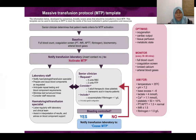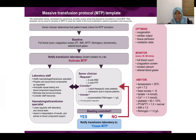The specific targeted aims you must monitor and achieve at all times are: body temperature more than 35°C, pH more than 7.2, base excess less than 6, lactate less than 4, calcium more than 1.1, platelets more than 50, PT/PTT less than 1.5 times normal, INR less than or equal to 1.5, and fibrinogen more than 1 g/L.